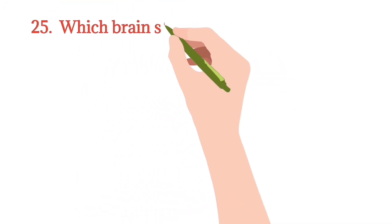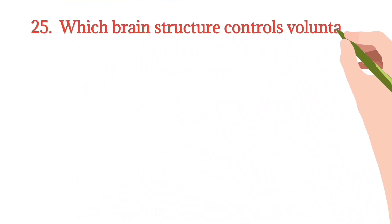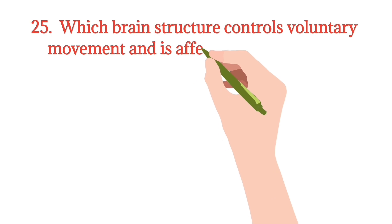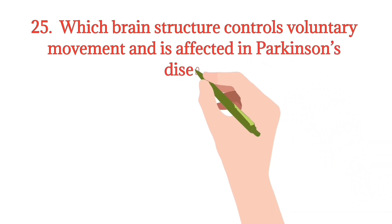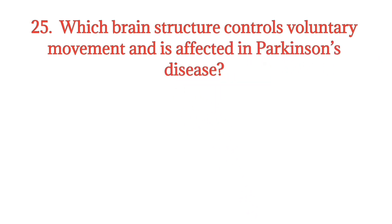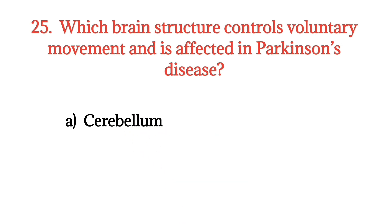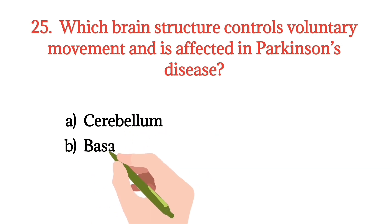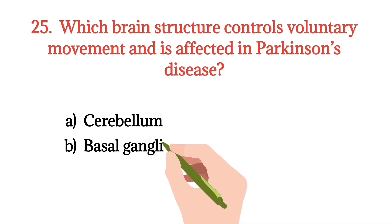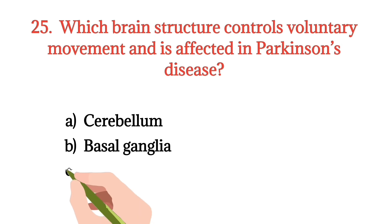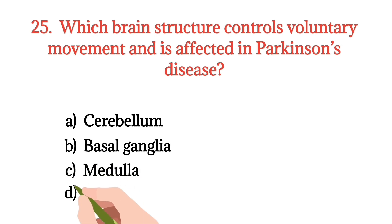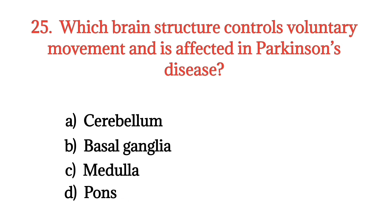MCQ number 25. Which brain structure controls voluntary movement and is affected in Huntington's and Parkinson's disease? Option A: Cerebellum. Option B: Basal ganglia. Option C: Medulla. Option D: Pons. The right option is Option B.